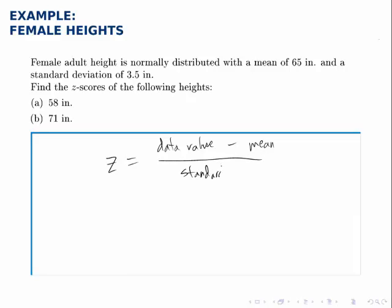This z-score represents how many standard deviations the data point is above or below the mean. If the z-score is positive, it's above the mean; if it's negative, it's below the mean.